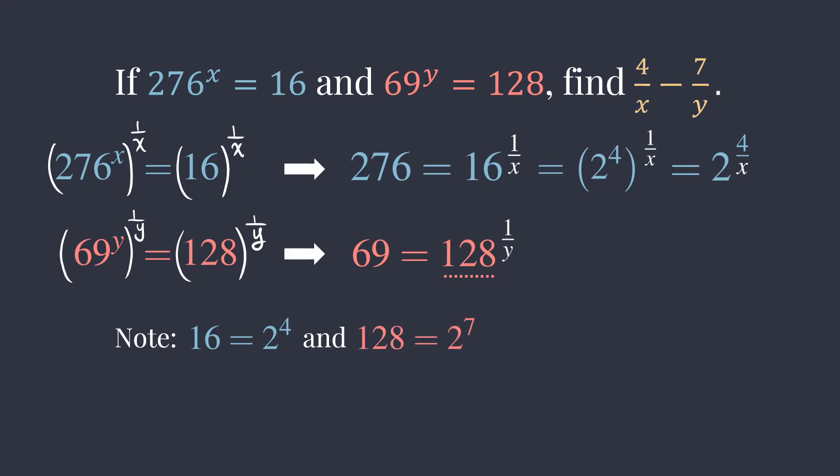Since 128 is 2 to the 7th power, we can write 128 to the 1 over y as 2 to the 7th power, with an outside exponent of 1 over y, which becomes 2 to the 7 over y.